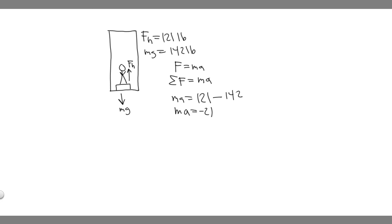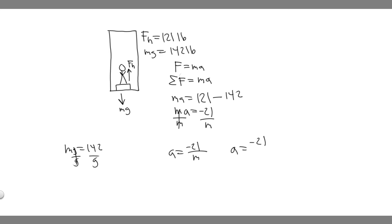What we're trying to do is solve for the acceleration, so we want to divide by the mass. You get a equals minus 21 divided by the mass. We know mg equals 142, so if we divide both sides by g, that gives us the mass. So a equals minus 21, and then mass is equal to 142 over g. This is basically equal to minus 21 over 142 times g.